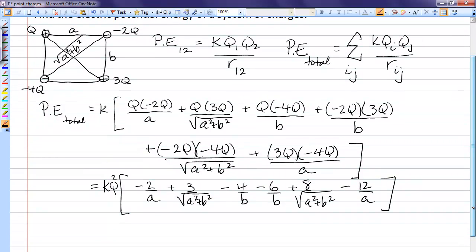And then one further simplification. We'll gather together the A terms, so we have negative 2 plus negative 12 is negative 14 over A.